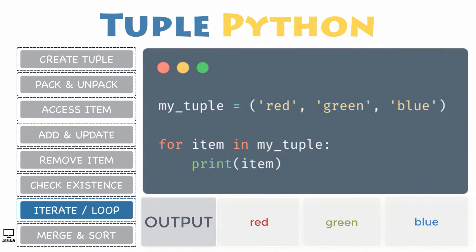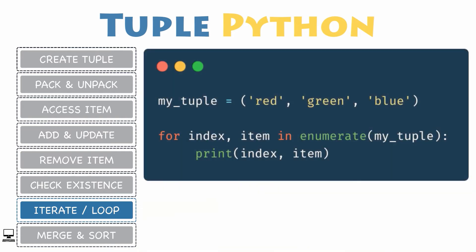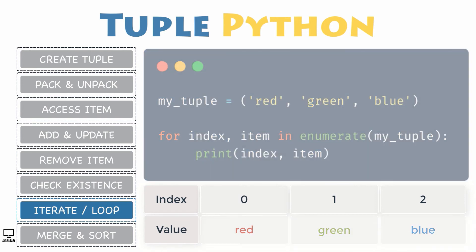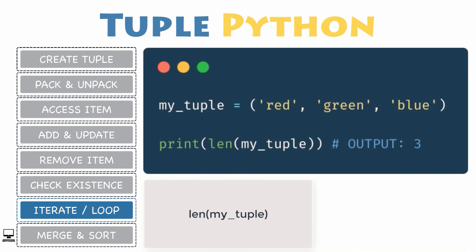But if you want to update the items, you need the indexes. A common way to do that is to use the enumerate function. This loop iterates through the tuple, unpacks the index and value of the current item on each iteration, and prints out each item with its associated index. If you do not know how the enumerate function works, please check out the suggested video about Python for loops.